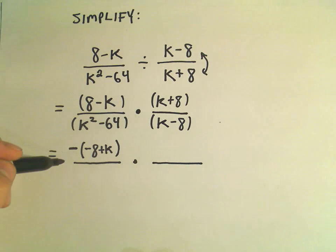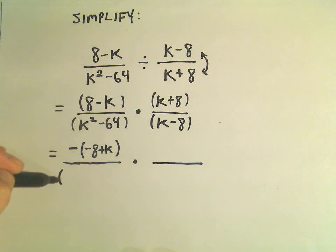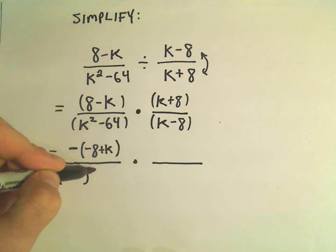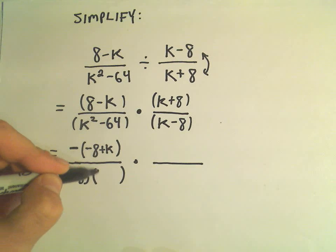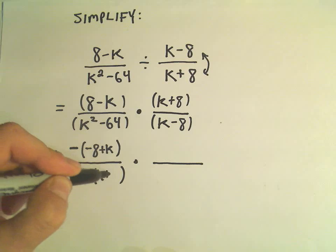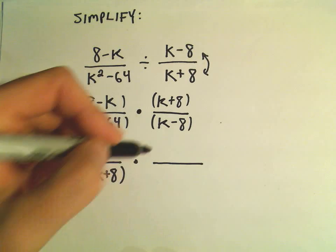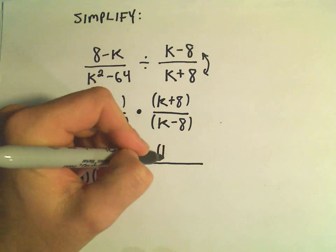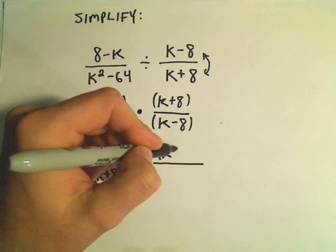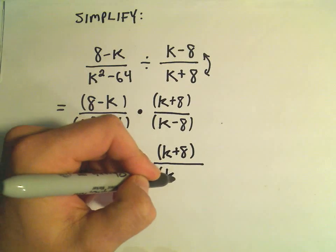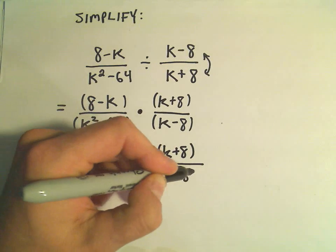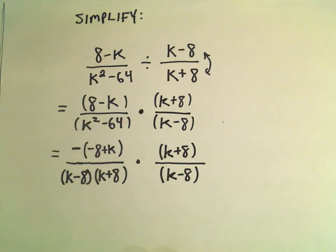Then we have k squared minus 64. I recognize that as a difference of perfect squares, so that factors as k minus 8 times k plus 8. On the other side we have k plus 8 times k minus 8.